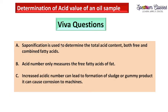For viva questions: saponification value is used to determine total acid content — both free and combined fatty acids — whereas acid number measures only free fatty acids. The drawback of a high acid number is that it can lead to formation of sludge or gummy products and can cause corrosion to machines. I hope you found this video helpful. Please subscribe to my channel and give a thumbs up. Thank you for watching.